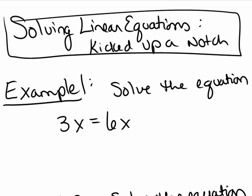In the first equation, we want to solve 3x equals 6x. Many students often think they should divide by 3 on both sides or divide by 6 on both sides. However, remember that in order to solve a linear equation, the first thing you should do is gather all the like terms together through addition and subtraction.